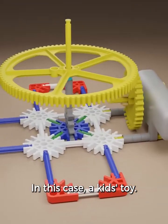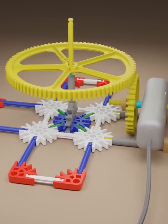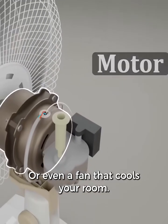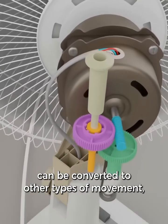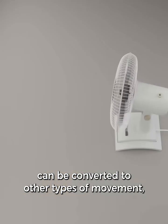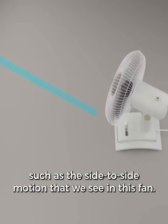In this case, a kid's toy. Or even a fan that cools your room. The spinning of the motor can be converted to other types of movement, such as the side-to-side motion that we see in this fan.